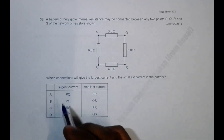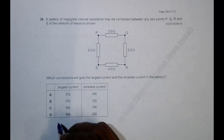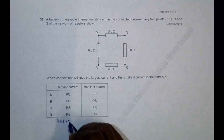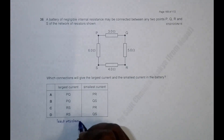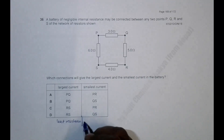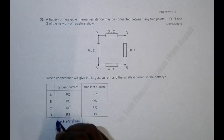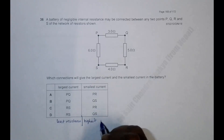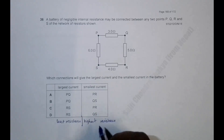In order to have the largest current, we should have the least resistance. And in order to have the smallest current, we must have the highest resistance. So let's calculate those things.